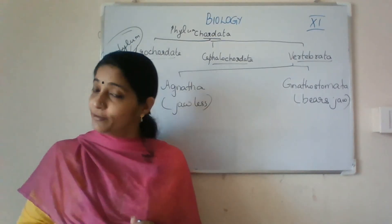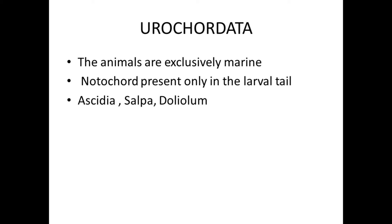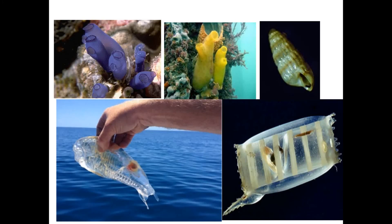We will see the features of Urochordata and Cephalochordata. Urochordata: the animals are exclusively marine — they can be seen only in marine environments. The notochord is present only in the larval tail. Examples include Ascidia, Salpa, and Doliolum. You can see the figures of these animals. These are aquatic, they are actually marine.